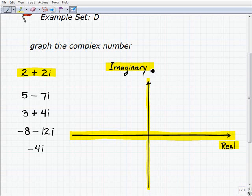2 plus 2i. So 2, just to do a quick review, plus 2i. You're going to plot 2 on the real number axis, and then you're going to plot 2i on the imaginary axis. So let's go ahead and start here.